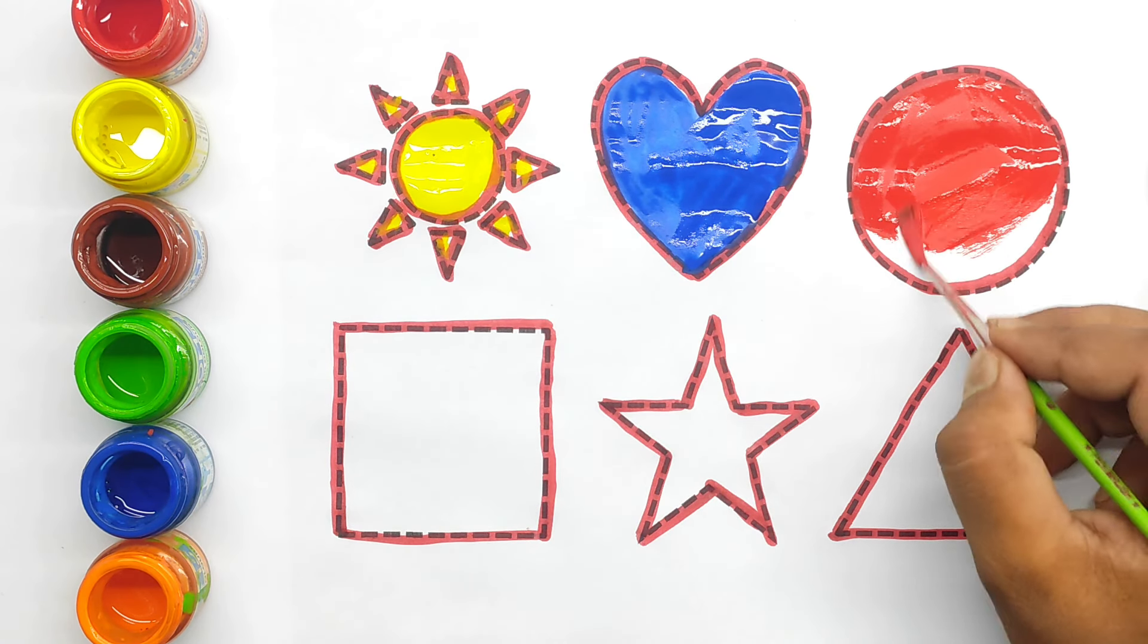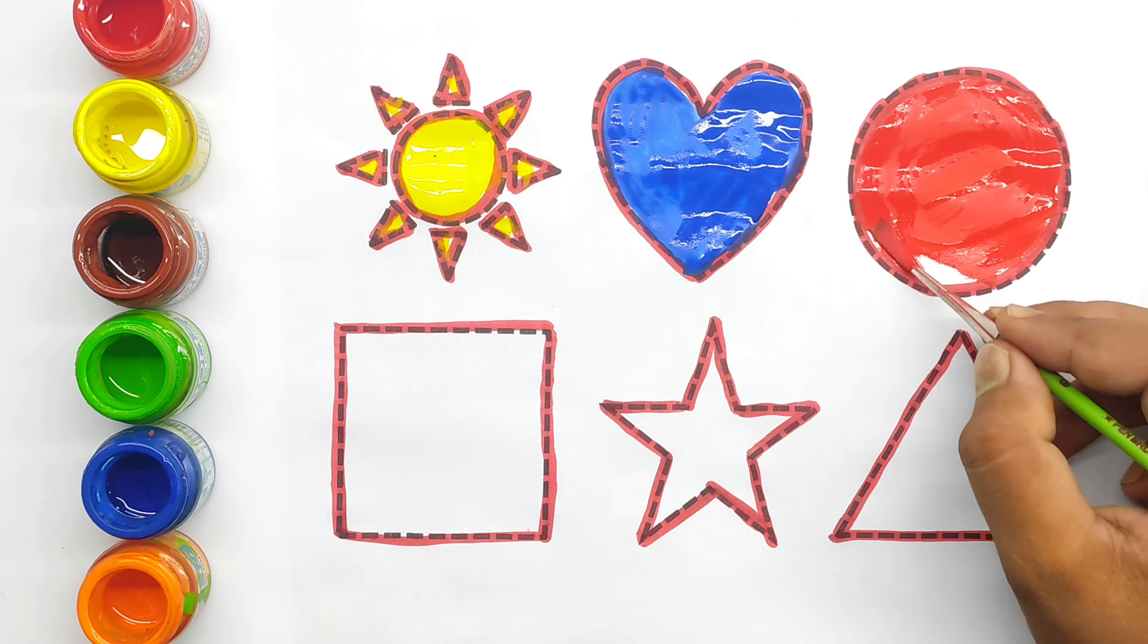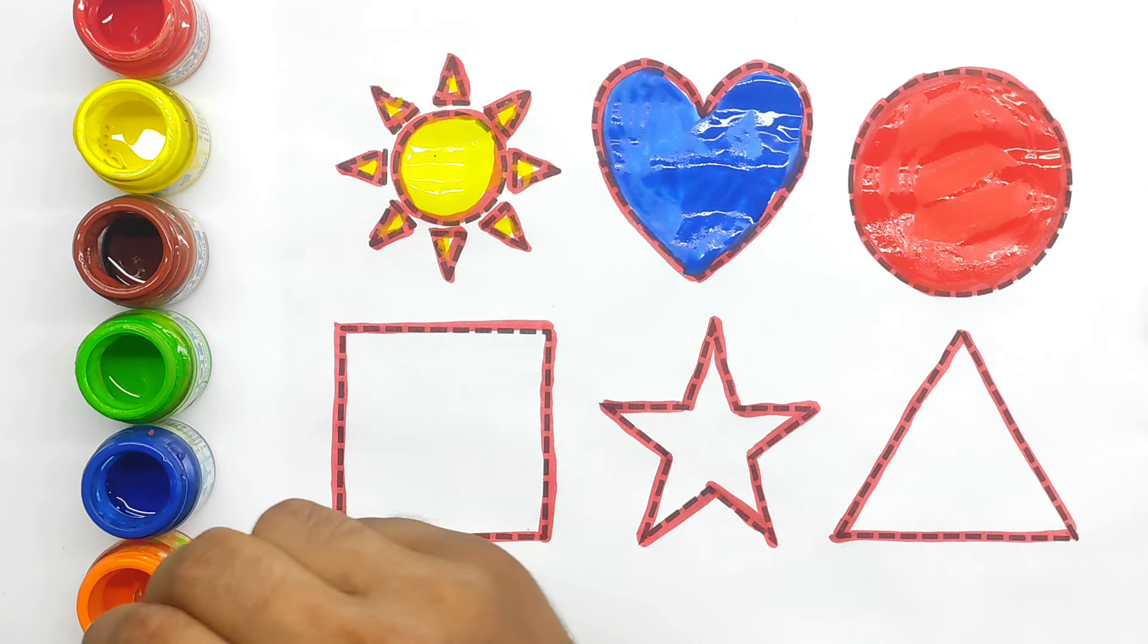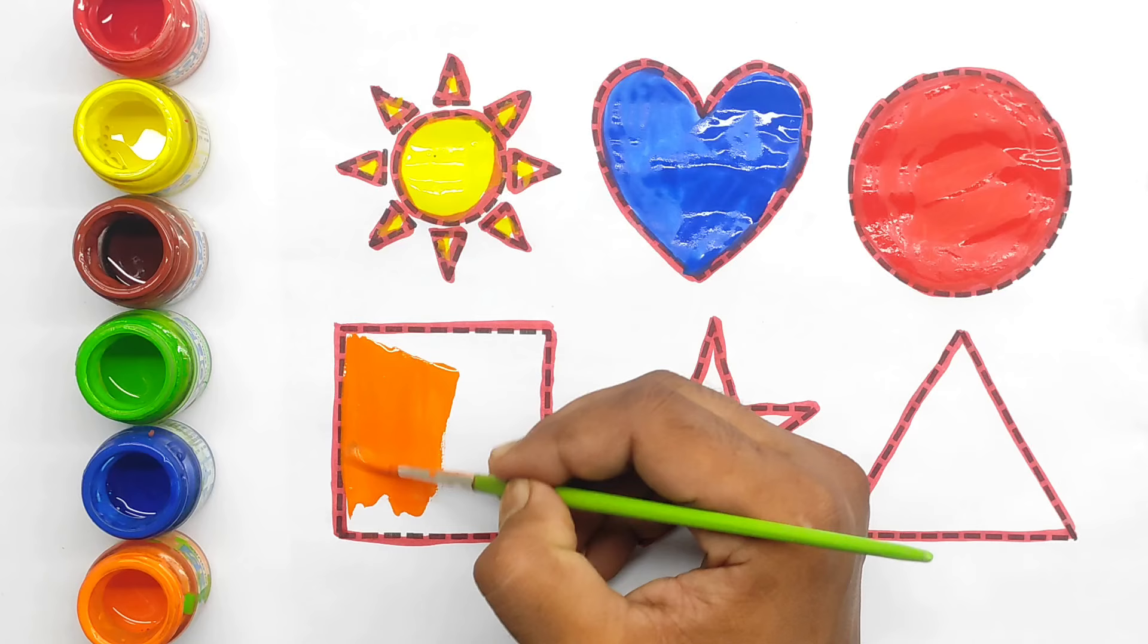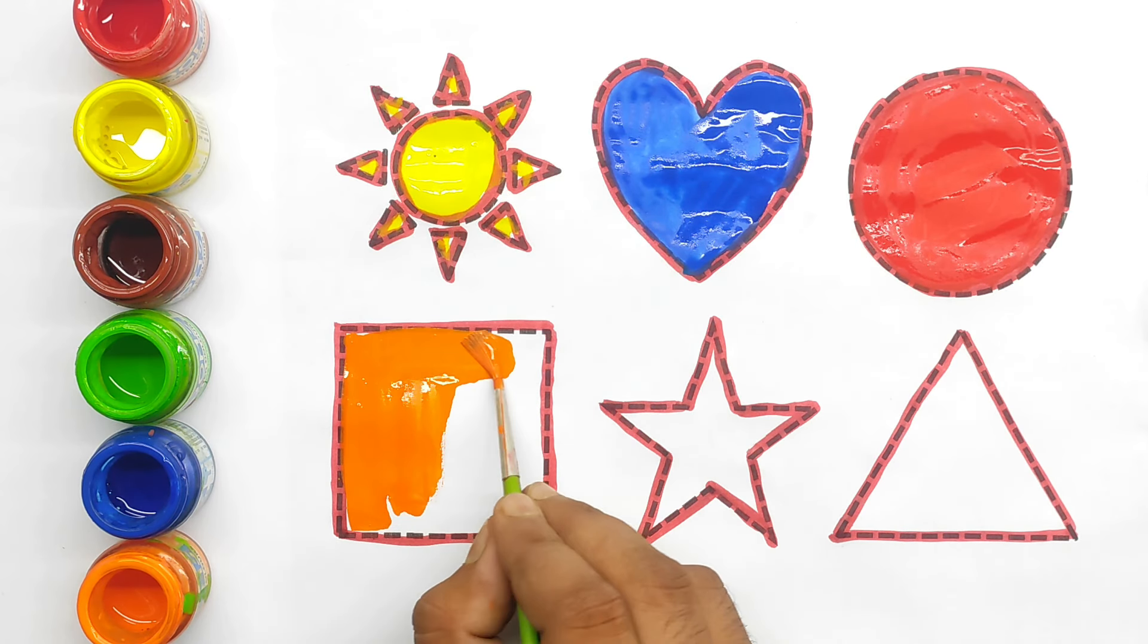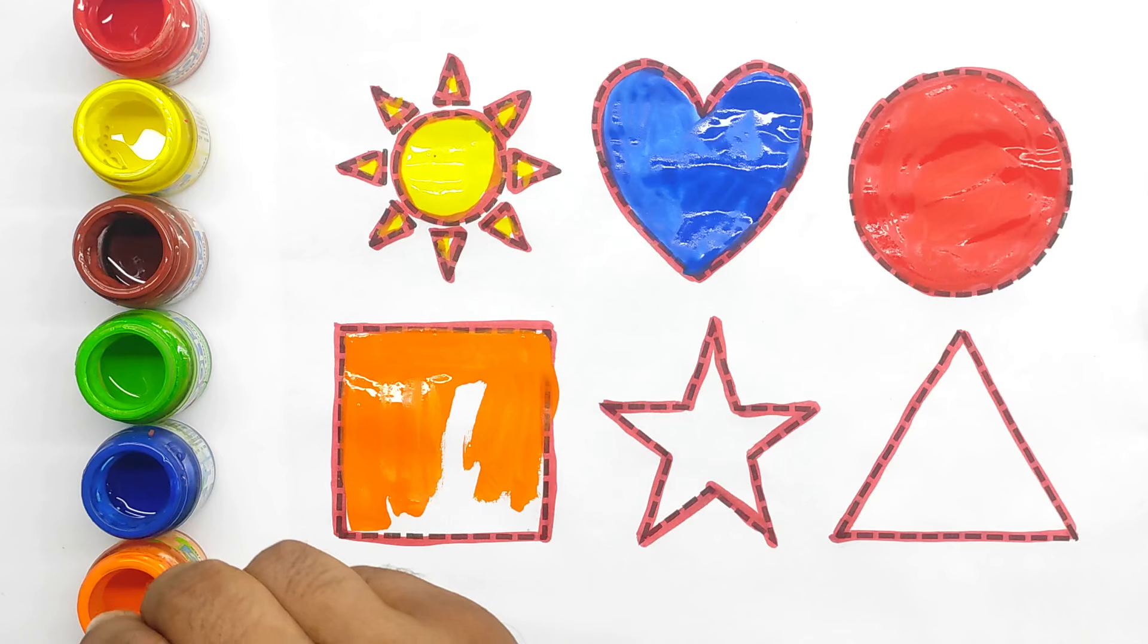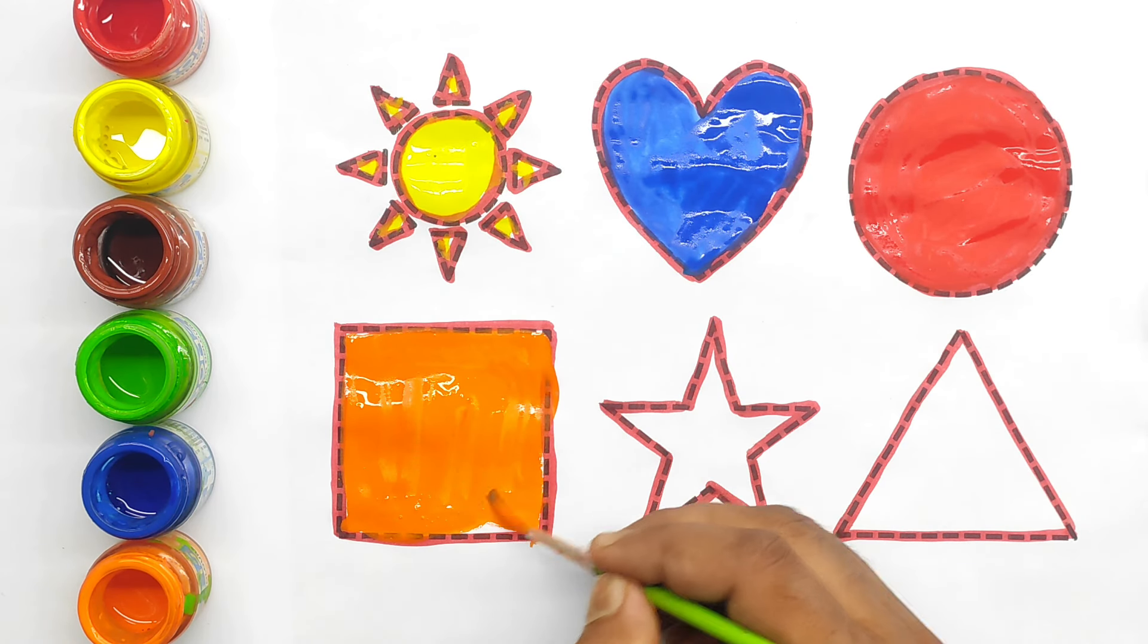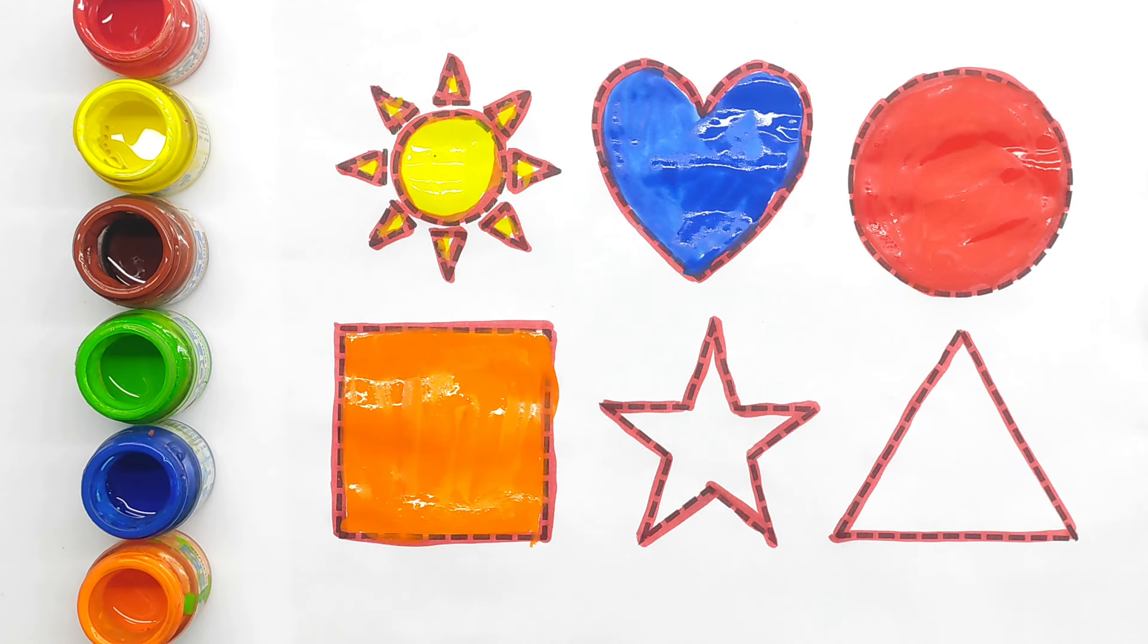Yeah kids, circle. Circle. Red color. Orange color square. This is square shape. Color fill. Orange color, green color. Square shape.